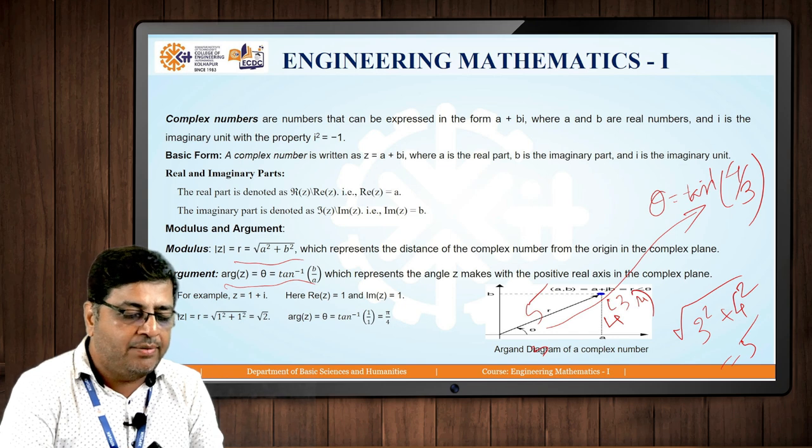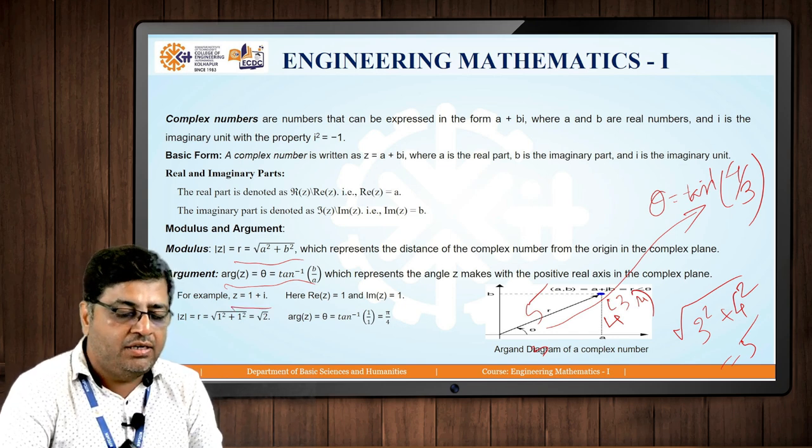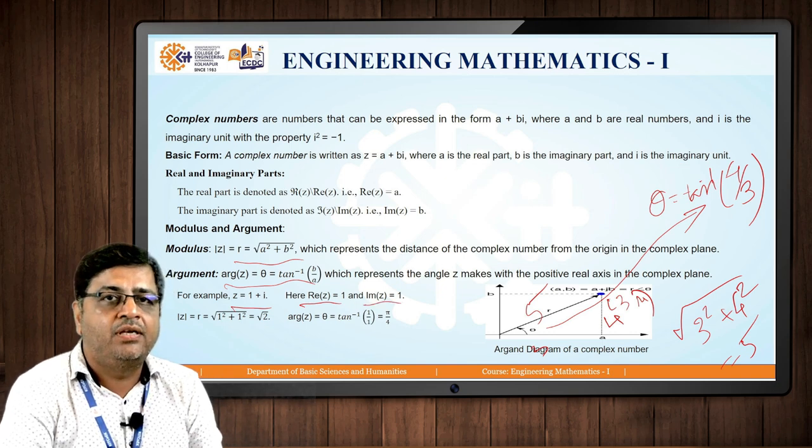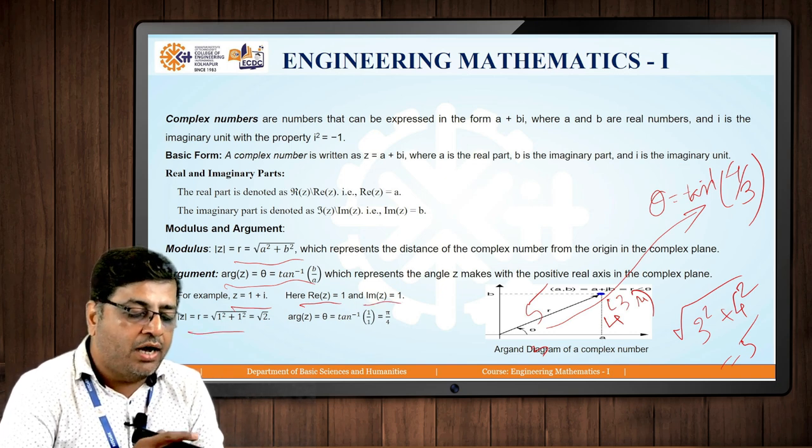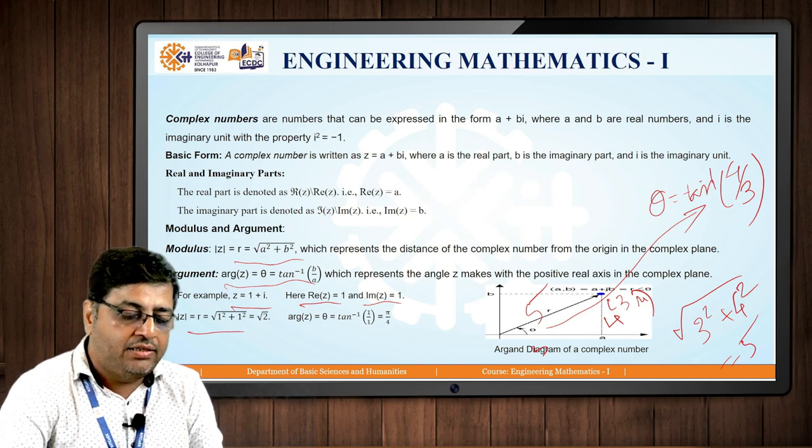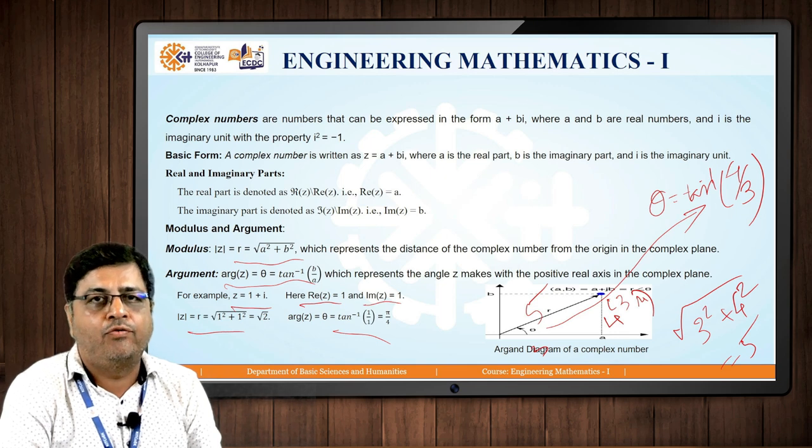Here I have given one example, Z is equal to 1 plus i. The real part of Z is 1, imaginary part of Z is 1 and the modulus R is under root of 1 square plus 1 square, that is root 2 and theta is tan inverse 1 upon 1, which is pi by 4.